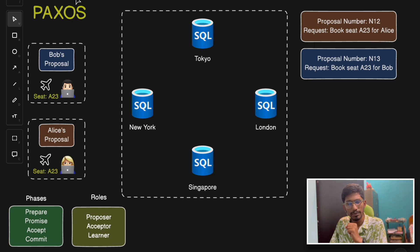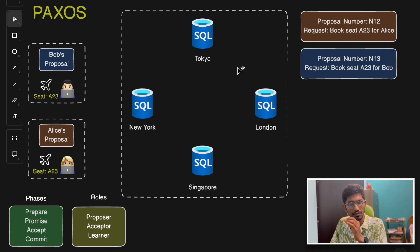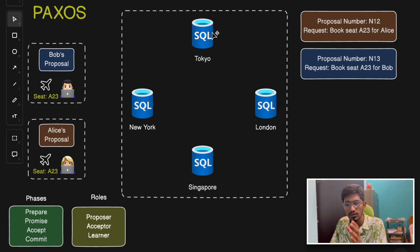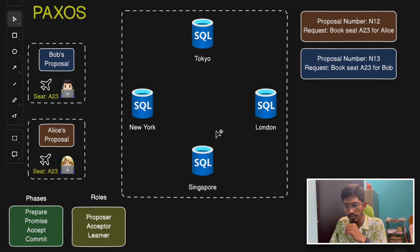Paxos is useful for implementing a consensus algorithm — how an entire distributed system can reach consensus. Why does leader election matter? Imagine a distributed database where multiple servers store the same data, say booking data for a flight. If two nodes make conflicting updates, data inconsistency may arise — for example, the same seat number is booked for two different users. The consensus algorithm ensures only one node commits the change while all other nodes follow.